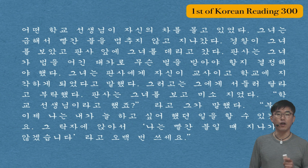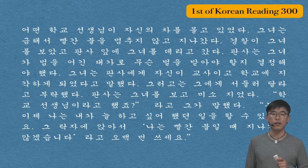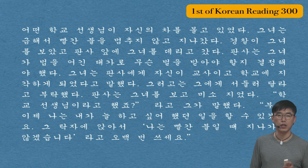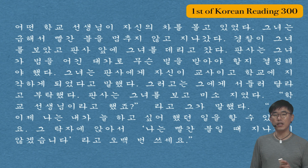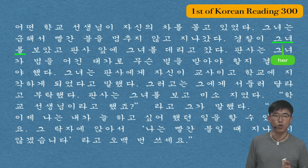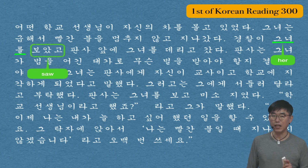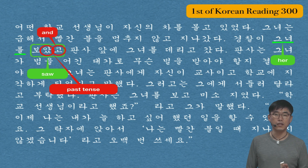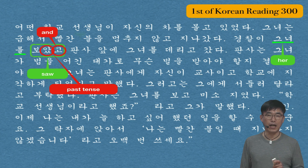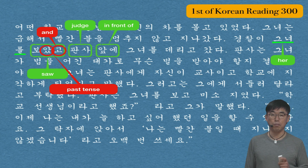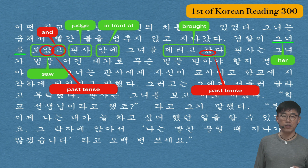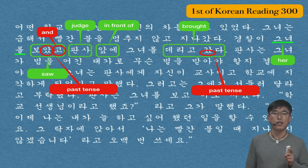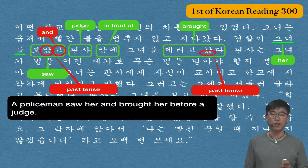The third sentence is 경찰이 그녀를 보았고 판사 앞에 그녀를 데리고 갔다 — A policeman saw her and brought her before a judge. 경찰 is policeman, 이 is the subjective case, and 그녀를 is her (objective case of she). 보았고 comes from 보다 (to see); 았 represents the past tense and 고 means and. 판사 is judge, 앞에 means in front of or before, and 데리고 갔다 comes from 데리고 가다, meaning to take or bring somebody. 갔다 is the past tense form of 가다.